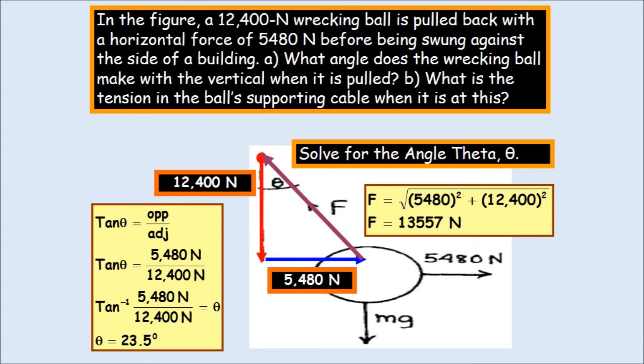So, looking at this using the arc tangent. Arc tangent is 5,480 divided by 12,400 Newtons or 23.5 degrees. I can either use sine, cosine, or the Pythagorean theorem to find the tension in the cable, the supporting cable, or here in this case, F.